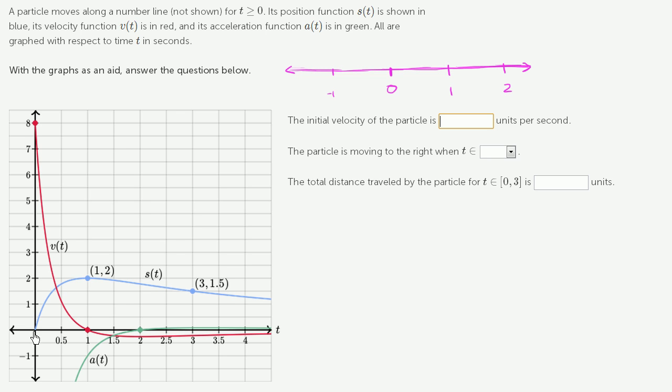So what's happening here? So at time equals 0, right over here, s of 0 is 0. And then as time increases, our position increases all the way until time equals 1. At time equals 1, our position is 2. And then our position, and then s of t starts decreasing.